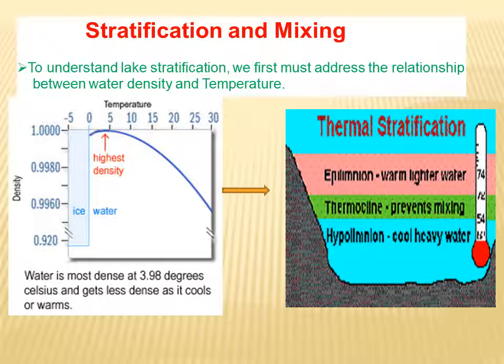The bottommost layer is called hypolimnion and the temperature here is 4 degree centigrade. The water here is cool as well as heavy. There is poor availability of oxygen due to no mixing of the lake, but an adequate amount of nutrients is present.